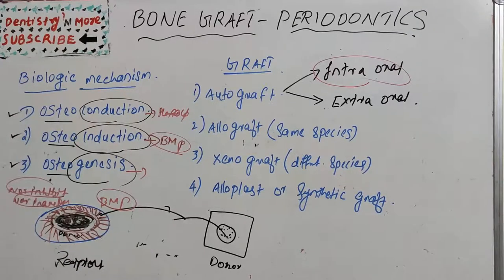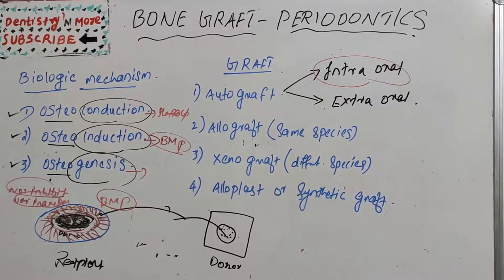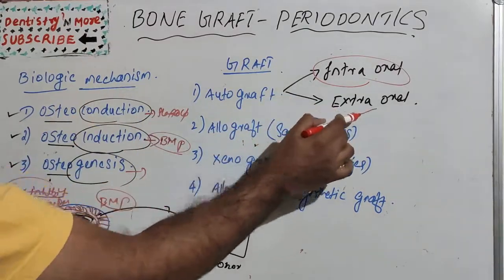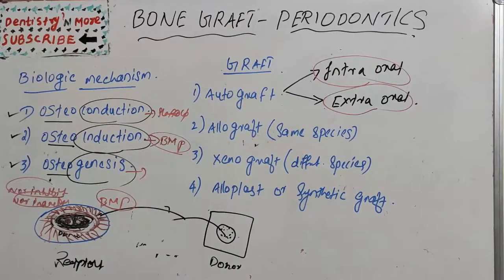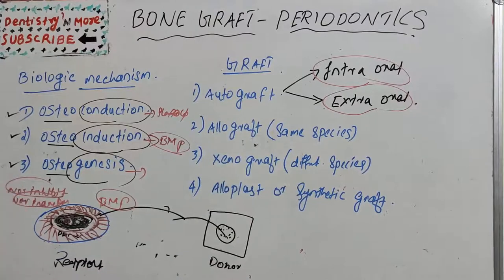Extra-oral sites from which a graft can be taken for implantation include the iliac crest, ribs, tibial metaphysis, and even the cranium. The second category is allograft or allogenic bone graft, which is taken from the same species.